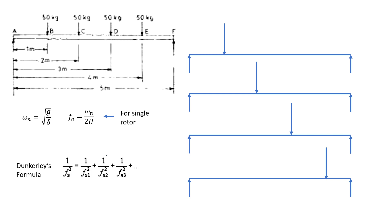In this numerical, we have four concentrated loads of 50 kg each. To find the natural frequency of the system, we divide this into four parts where in each case we put one point load: first 50 kg at point B, second at point C,